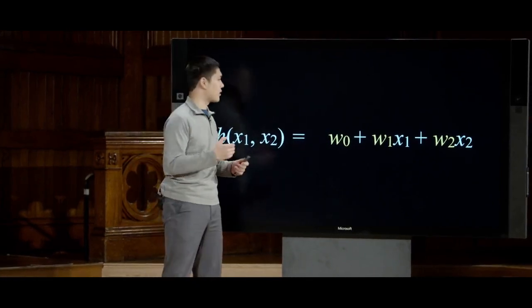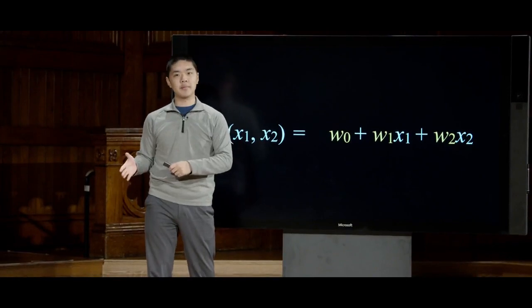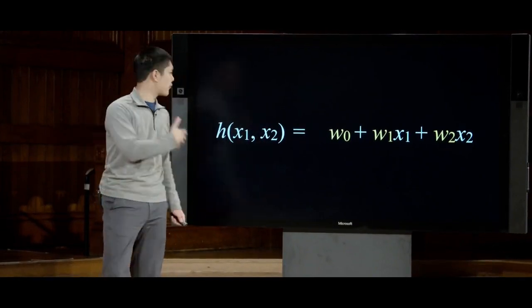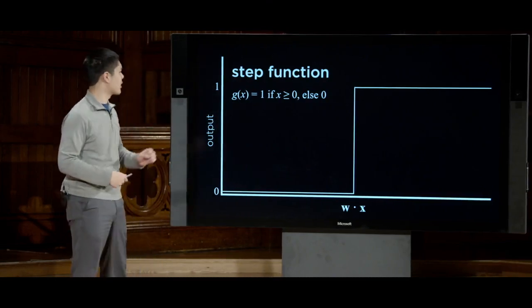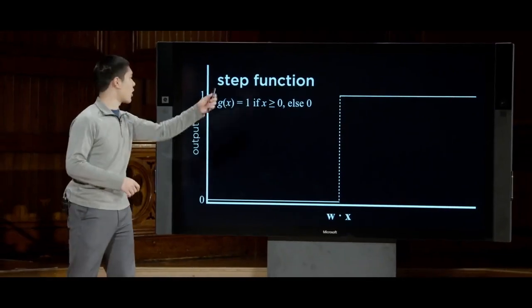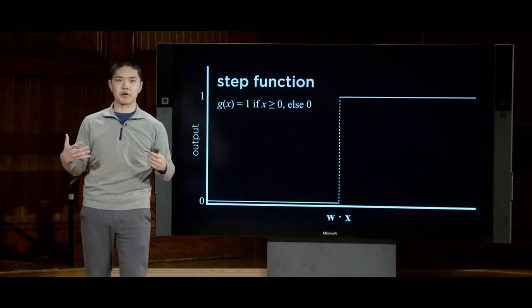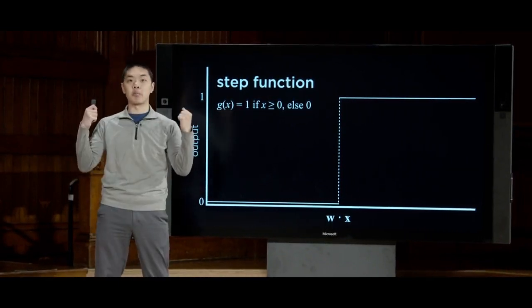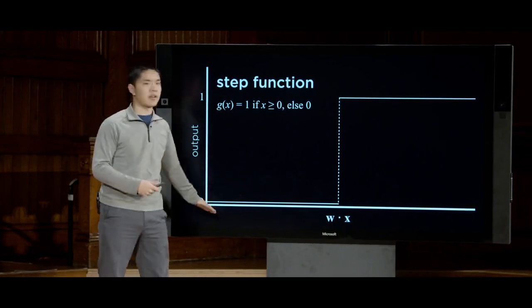To define a hypothesis function, we need to figure out what these weights should be to get some result. At the end, we need to make a classification like rainy or not rainy, so we use a function to define a threshold. We saw the step function, defined as 1 if the weighted sum is at least 0, otherwise 0. This is one way to define an activation function — a function that determines when the output becomes active, changing to 1 instead of 0.